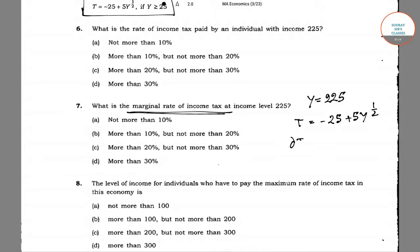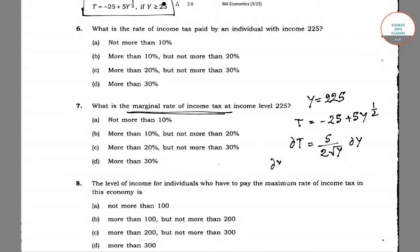Now dt equals 5 divided by 2 root y, times dy. So dy/dt will be equal to 2 root y divided by 5. Putting in the value y equals 225, root y equals 15. So 2 into 15 divided by 5 equals 6.